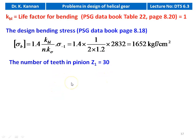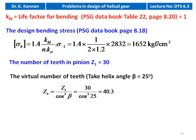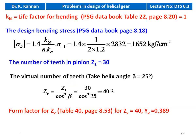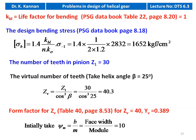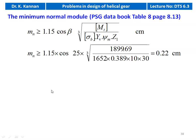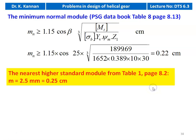Z1 = 30 is given. Virtual number of teeth: ZV = Z1 / cos³β = 30 / cos³(25°) = 40.3; for ZV = 40, form factor YV = 0.389 from table. Take ψm = B/m = 10. Minimum normal module from page 8.13, table 8: mn ≥ 1.15 cosβ × ∛[MT_design / (σB × YV × ψm × Z1)] = 1.15 × cos25° × ∛[1899.69 / (2385 × 0.389 × 10 × 30)] = 0.22 cm. Next higher standard module from table 1: mn = 2.5 mm = 0.25 cm.